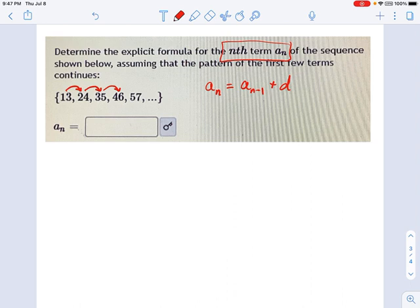So let's just pick term 2. a2 equals, what's the term before a2? Well, that's a1 plus d. And now go over to your sequence. So a2 is 24, a1 is 13. And now we can just solve this and figure out what d is. Super easy. So we just subtract 13 from each side. We get 11 equals d.